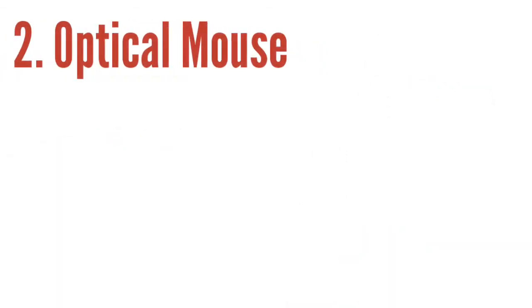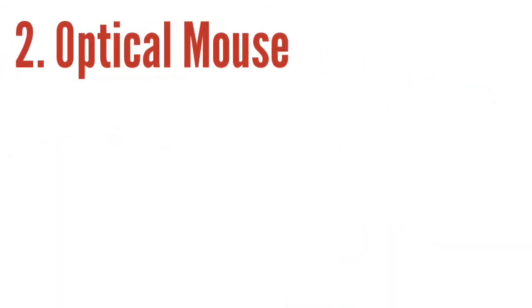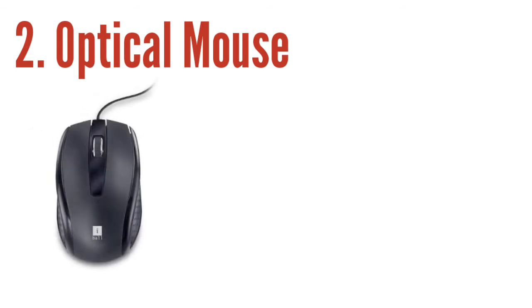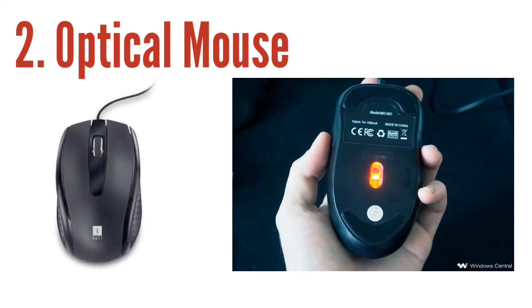An Optical Mouse is a computer mouse which uses a light source, typically a light emitting diode (LED), and a light detector such as an array of photodiodes, to detect movement relative to a surface.